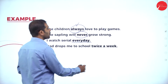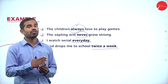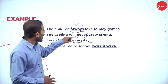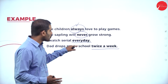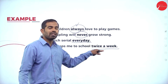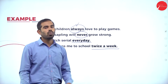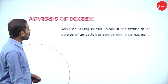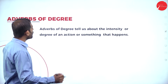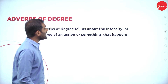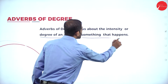'Dad drops me to school twice a week' — here twice a week tells us how often. So we are talking about frequency. Now let us move on to adverbs of degree. Adverbs of degree tell us about the intensity or degree of an action or something that happens — the level of intensity.